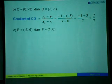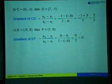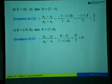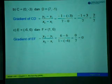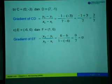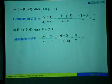For example C, where E equals to (-6, 6) and F equals to (1, 6), the gradient of EF is given by y2 minus y1 over x2 minus x1. So in this case, y2 minus y1 is 6 minus 6, and x2 minus x1 is 1 minus negative 6. So we have 0 over 7, which equals 0.